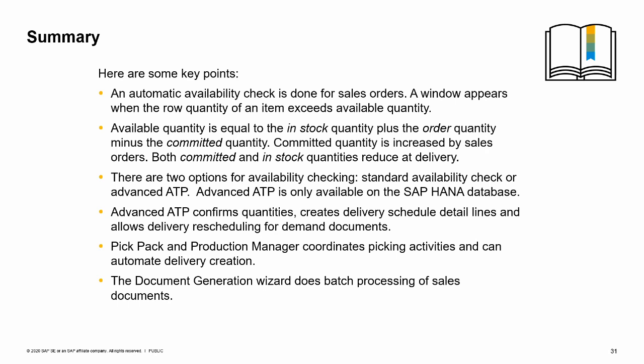The standard check gives you options to change delivery dates, view an ATP report, check other warehouses, choose alternate items, delete the item row, or ignore the message. Advanced ATP gives additional functionality: it confirms quantities, creates delivery schedule detail lines, and allows delivery rescheduling for demand documents. Committed quantity is increased by sales orders and reduced when the item is delivered; delivery also reduces in-stock quantity. The pick-pack and production manager coordinates picking and packing activities and can automate delivery creations. The document generation wizard performs batch processing of sales documents — for example, it can automate invoice processing.